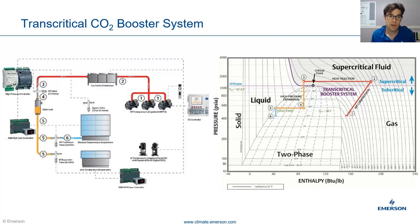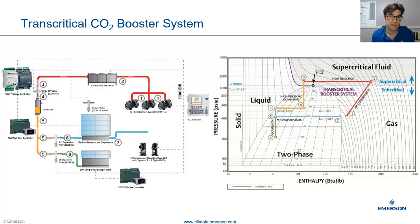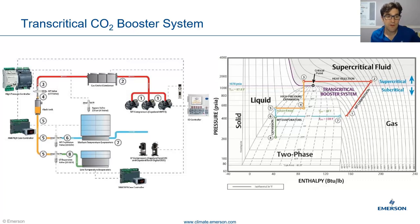That then goes back to the medium temp suction. For the low temp, you reduce the pressure even more. So that's the same liquid coming into the valve at, say, 500 PSI, but it's just dropping the pressure further — down to around 200 PSI, or around minus 20°F SST for the low temp.